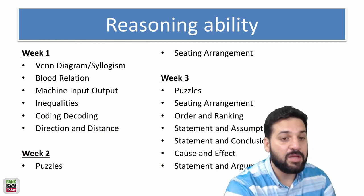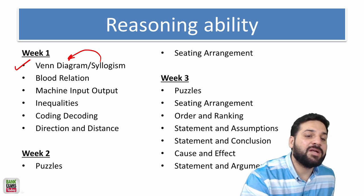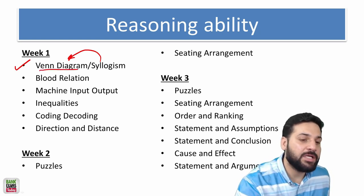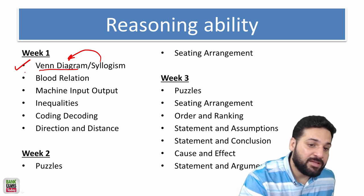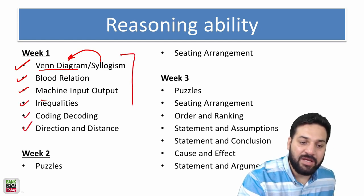Move on to the reasoning ability. Start with syllogism. I recommend solving syllogism using the Venn diagram. I have already done a video about it. Then after syllogism, move on to blood relations and machine input output, inequalities, coding decoding, direction and distance.